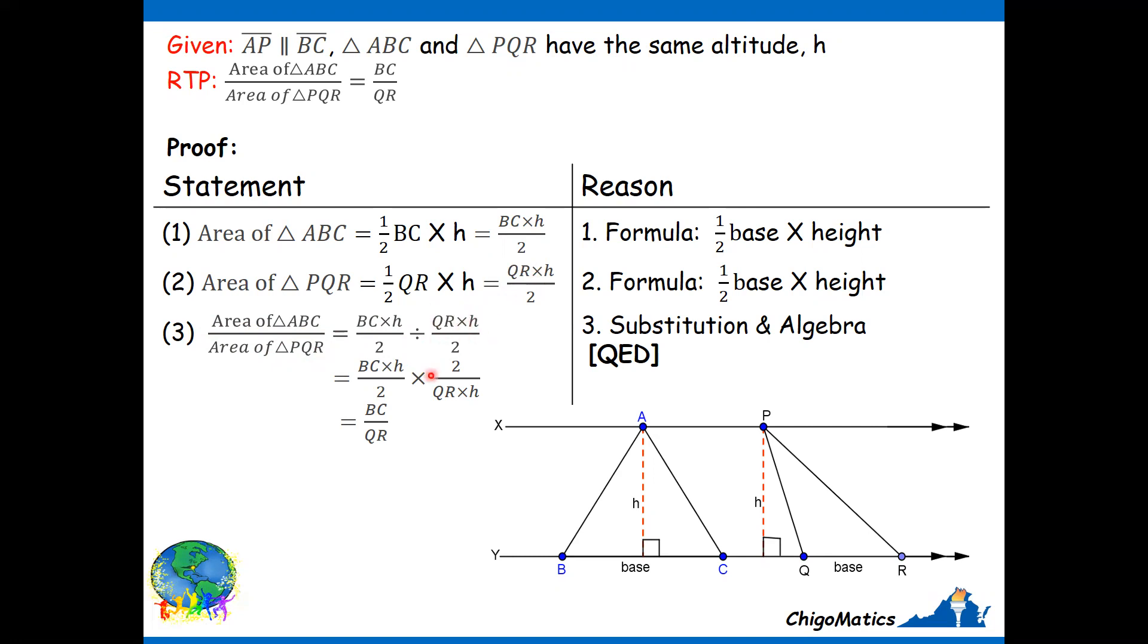Then from there, I change the division sign to a multiplication sign. Then I substitute this divisor by its reciprocal or inverse, which is this one. Then you realize that the two and the two will cancel. The H and the H will cancel. I remain with BC over QR. And we have shown that the area ratio is equal to the ratio of the respective bases.